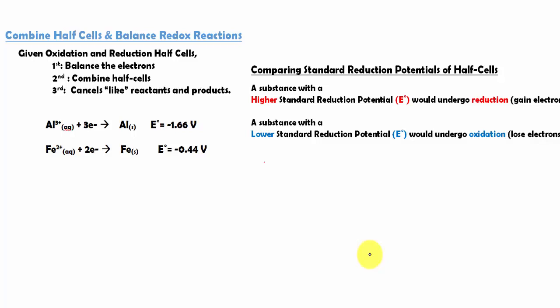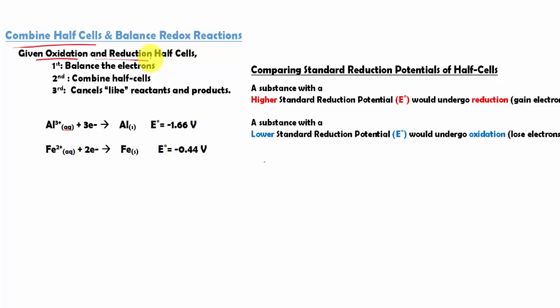In this lesson, we are going to learn about combining half cells of a redox reaction and how to balance the redox reaction. Here are the general steps. In most cases, the half cell will be given in terms of oxidation and reduction, but sometimes they will give you some other kind of data that allows you to determine which one undergoes oxidation. Let's look at an example.